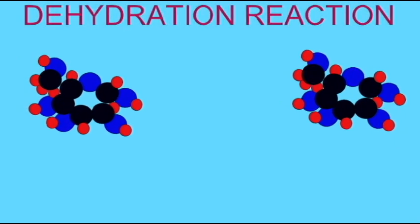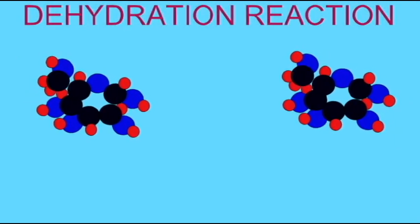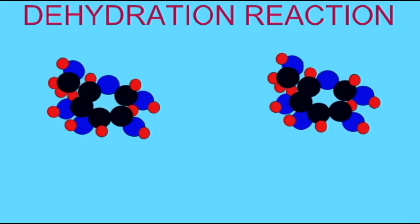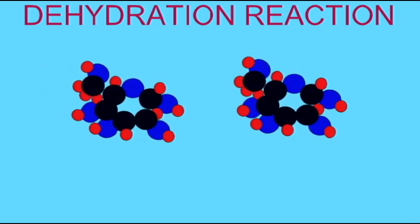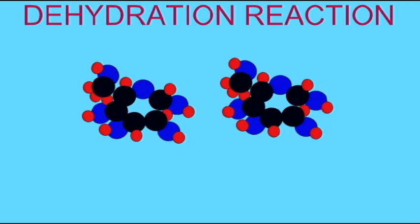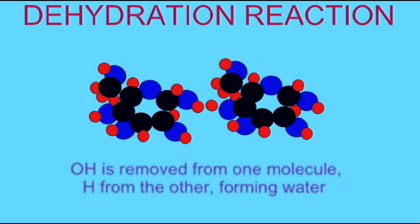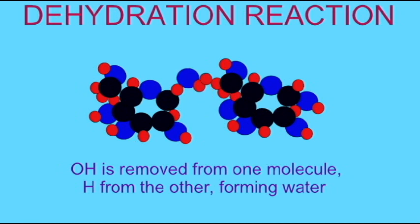Dehydration reactions can be used to turn small carbohydrates into larger carbohydrates. When an OH or hydroxyl group is removed from one reacting molecule and a hydrogen from another reacting molecule, water is formed and thus water is removed from the reacting pair.